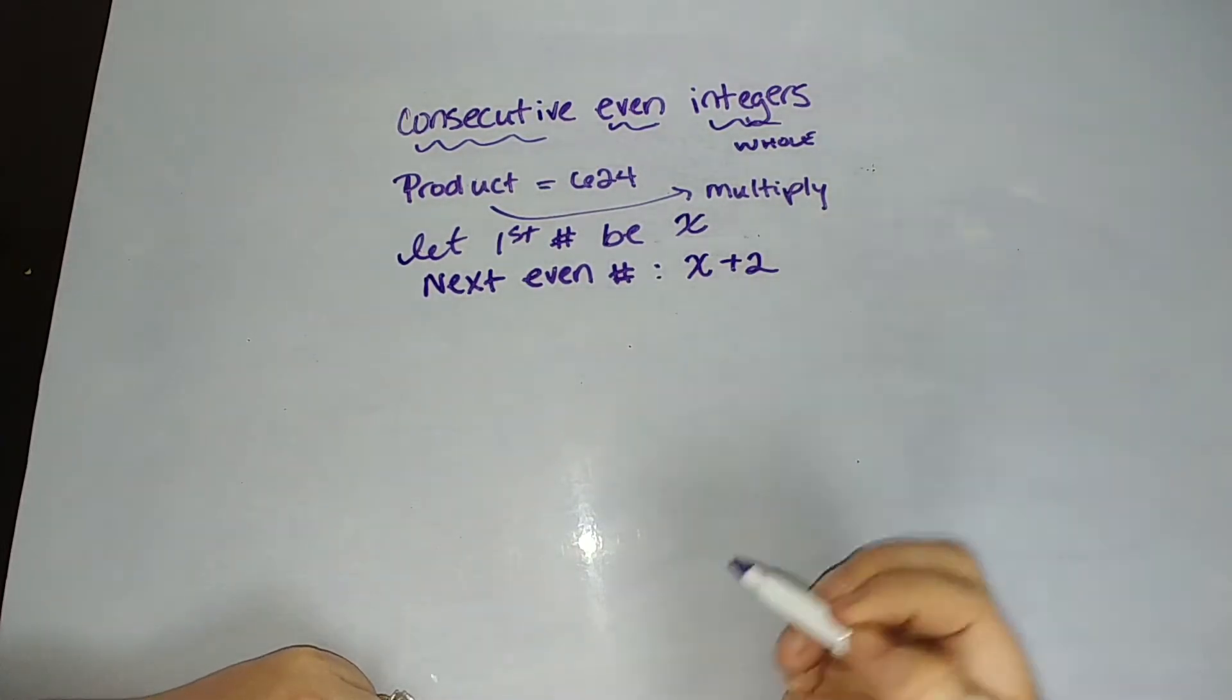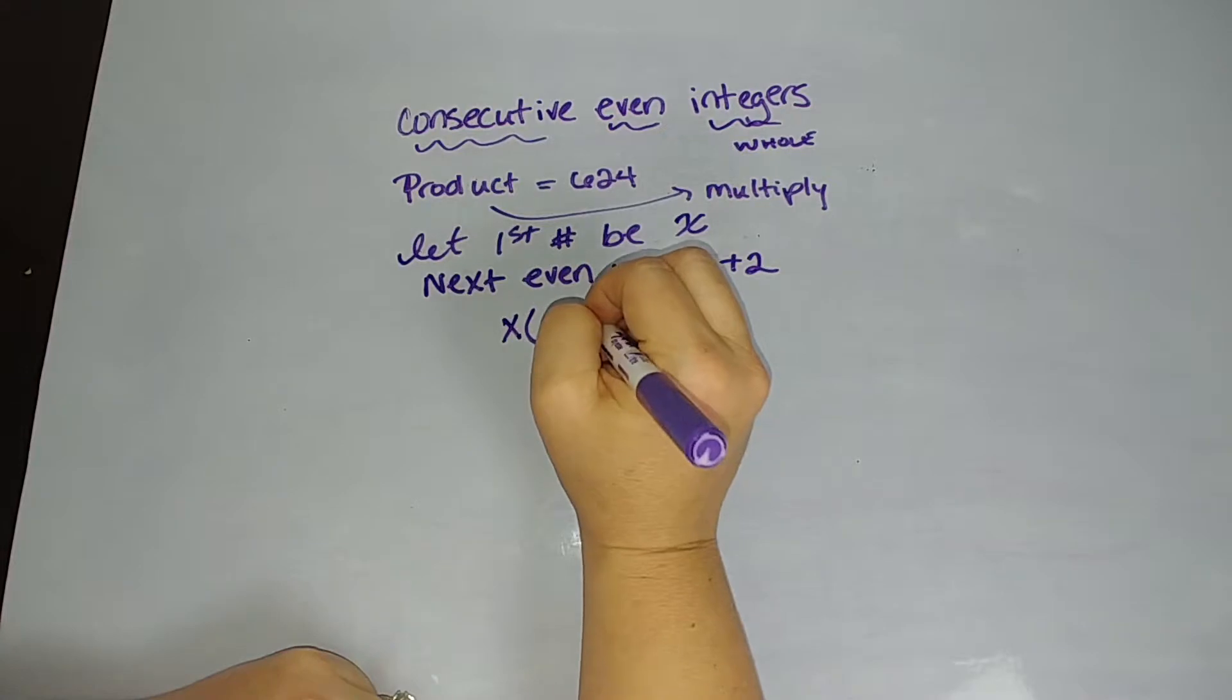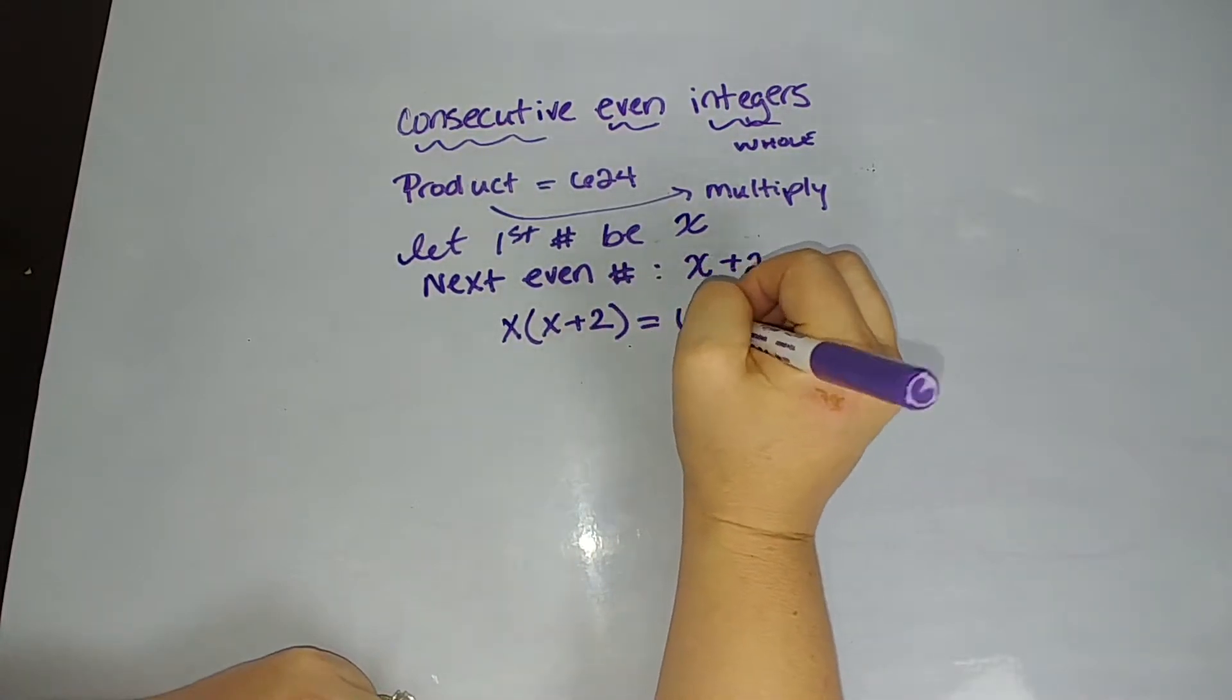So this x, x plus 2, when you're looking for the sum of two consecutive evens, the sum of two consecutive odds, the product of two consecutive evens or odds, you're going to use x and x plus 2. You're going to see it, it happens a lot. Okay, so what do we know about these? We know that we want the product of these two things to be 624.